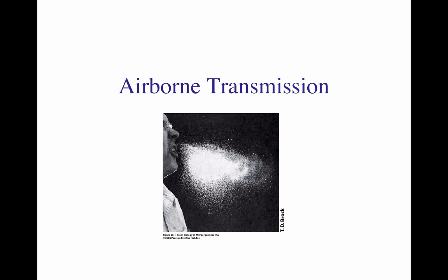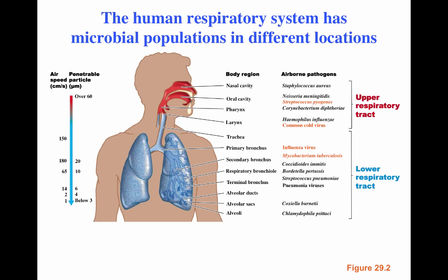When a person coughs, they create an aerosol of small saliva particles. Some of those particles at the point of the cough can travel at nearly 100 miles per hour. Even across a room, that's sufficient for a particle carrying an infectious agent to travel from one person to another. That's why using a tissue or coughing into your elbow is the best way to protect yourself.